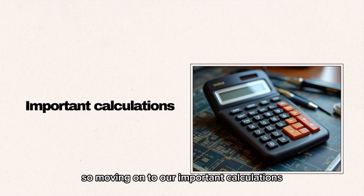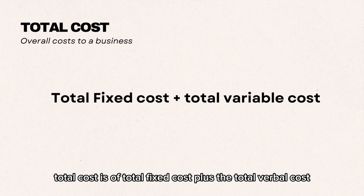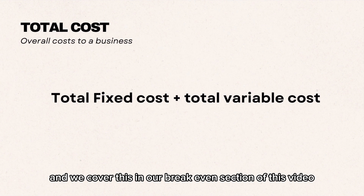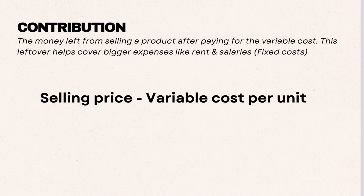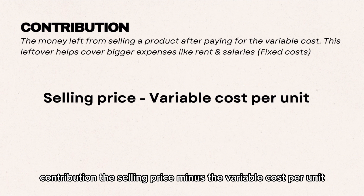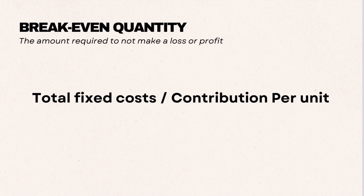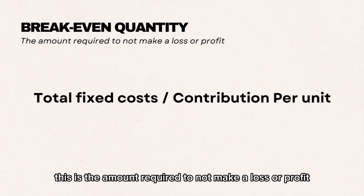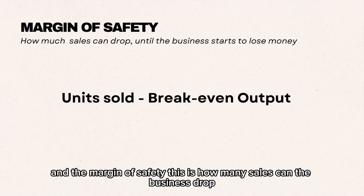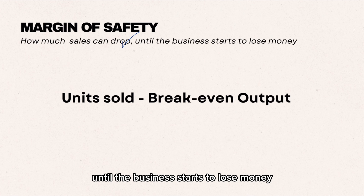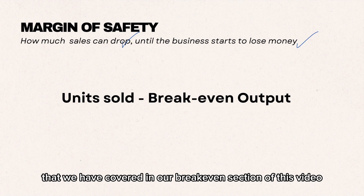Moving on to our important calculations. Total revenue is price multiplied by quantity sold. Total cost is total fixed cost plus total variable cost. Average cost is total cost divided by total output, giving us the average cost of all units sold. Contribution is the selling price minus the variable cost per unit — the money left over from selling a product after paying variable costs. Breakeven quantity is total fixed cost divided by contribution per unit — the amount required to not make a loss or a profit. And the margin of safety is total units sold minus the breakeven output.